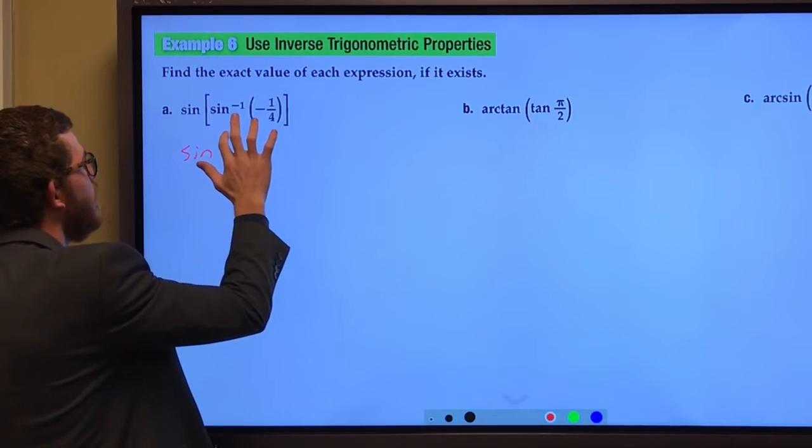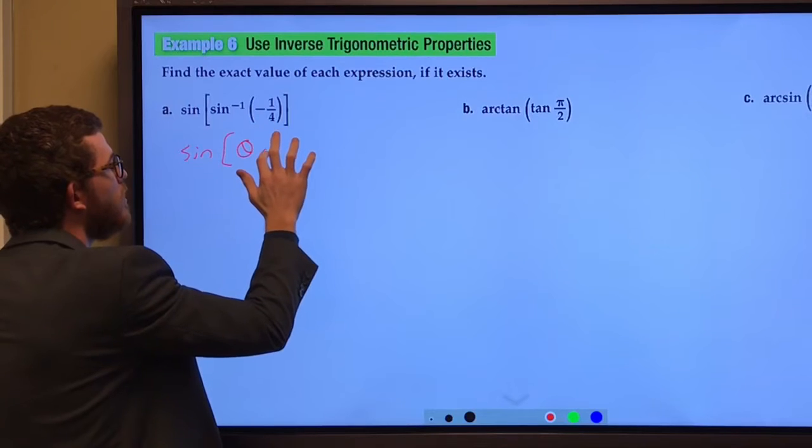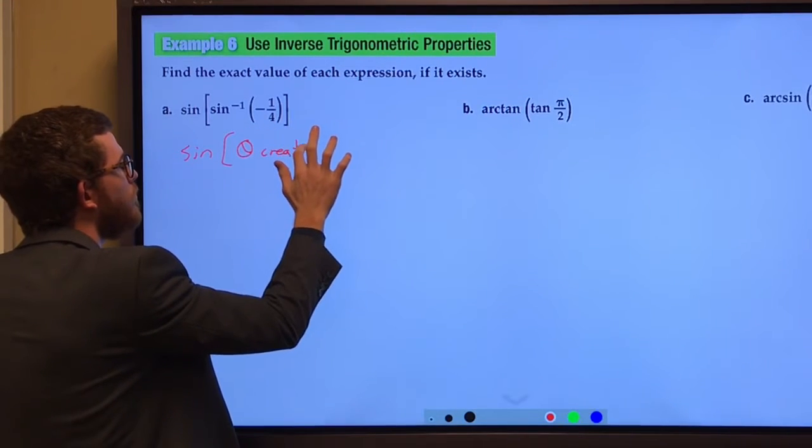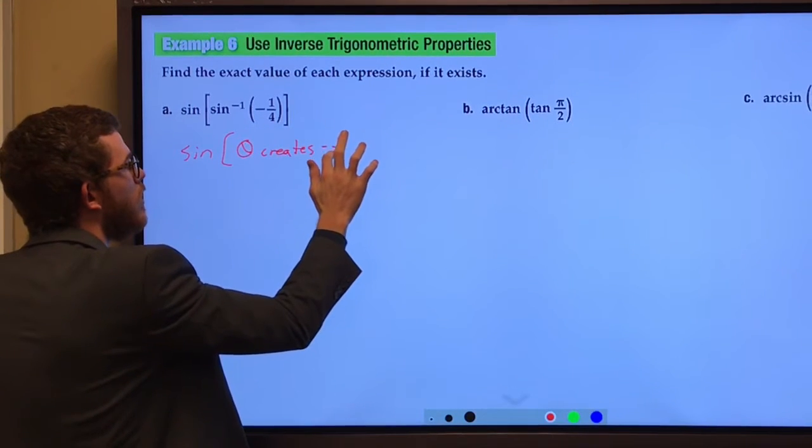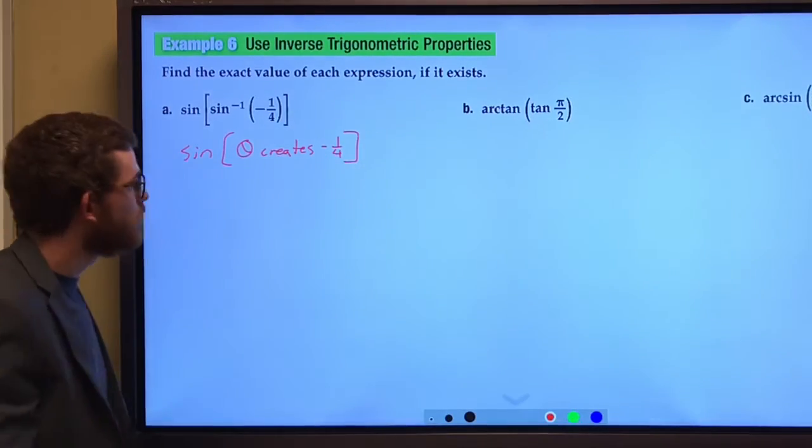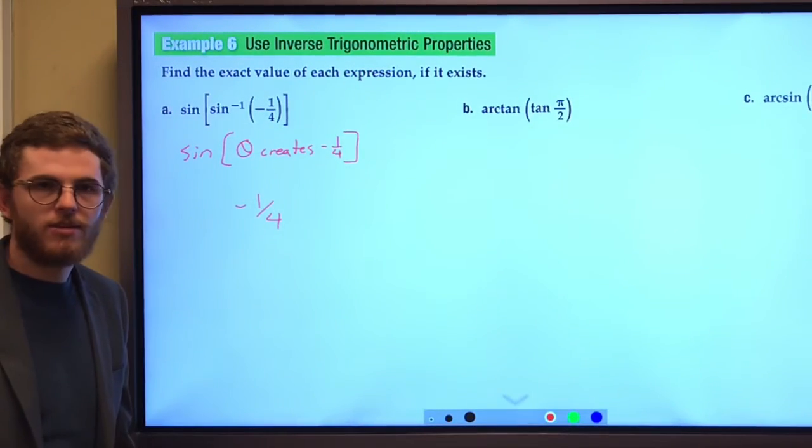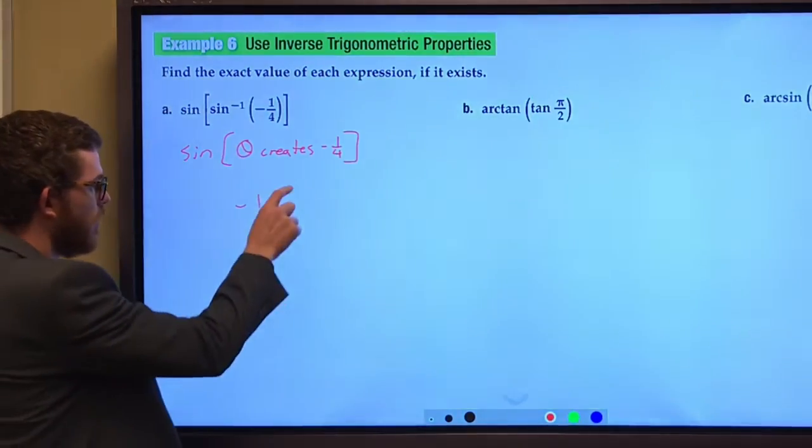This is sine of some angle that creates a negative one-fourth. So the sine of that angle must be negative one-fourth. It's that simple.